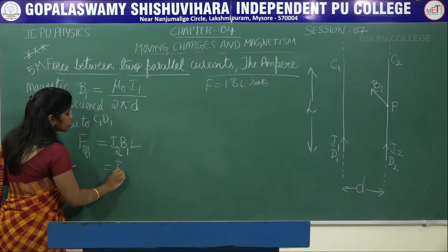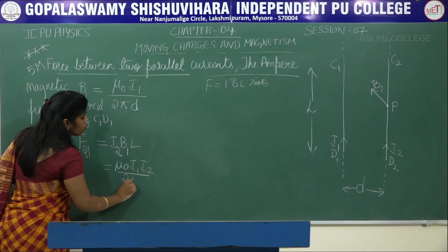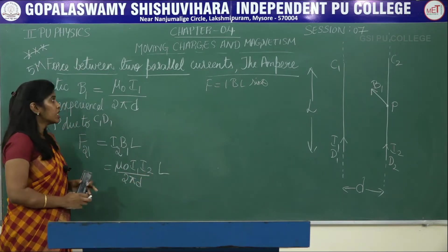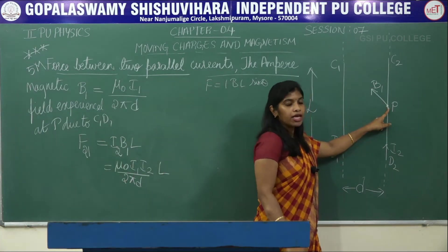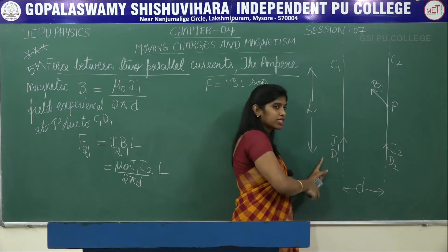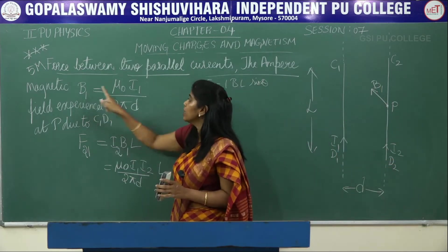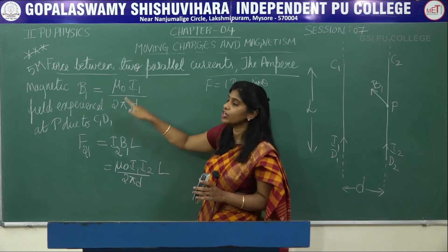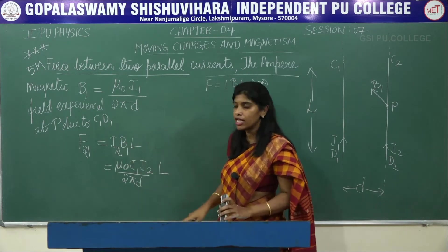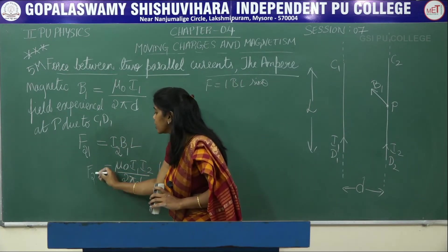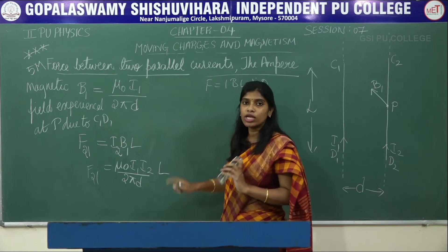Substituting B1, we get F21 = μ₀I1I2 / 2πd × L. To clarify: the magnetic field at point P is B1 due to the first conductor (carrying I1), and the current flowing in the second conductor is I2. So F21 = μ₀I1I2L / 2πd. This is the magnitude of the force on the second conductor due to the first.